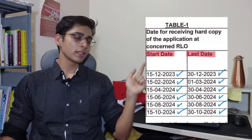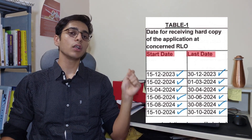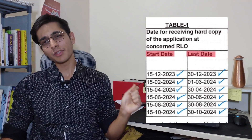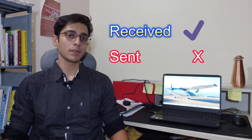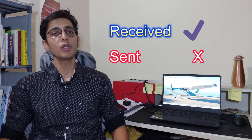There is a 15-day window that you can see on screen for the application to be sent to an RLO — that is, the Regional Licensing Office — of the respective city where the attempt is being held. You need to send a physical copy to this RLO, which must be received within those days. The document must be received by the RLO between those days — not just sent by you during that time.